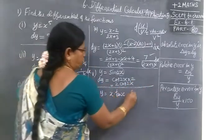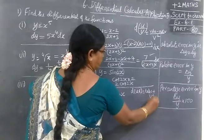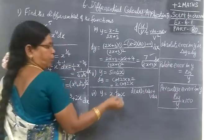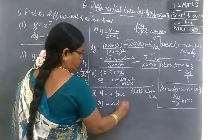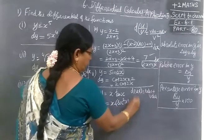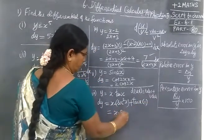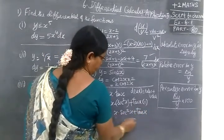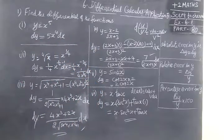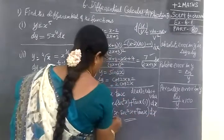Next, UV method. So d of UV equal to U dV plus V dU. So dy equal to first function into differentiation of second function plus second function into differentiation of first function. Equal to x secant squared x plus tan x. So the answer is x secant squared x plus tan x dx. So these are the answers for this.